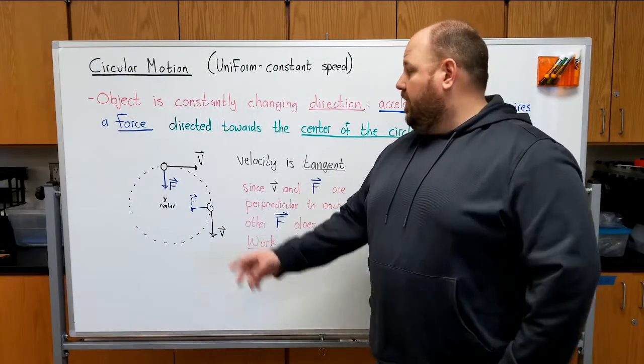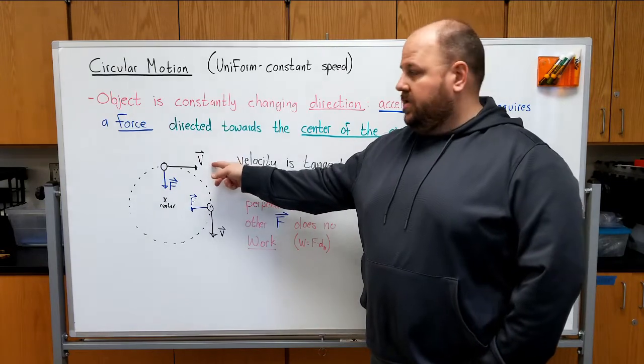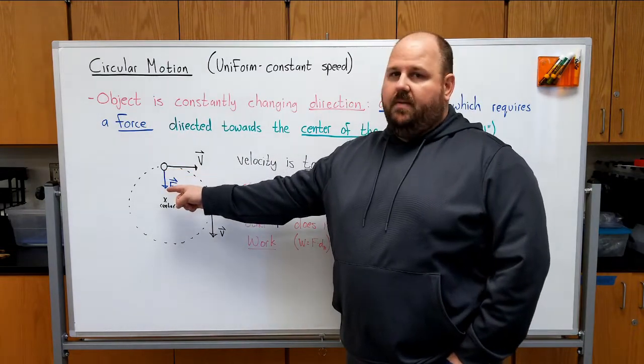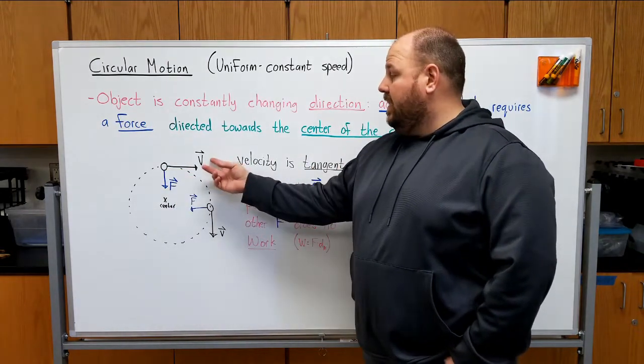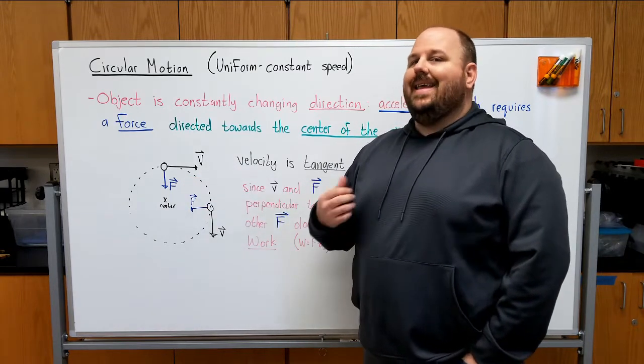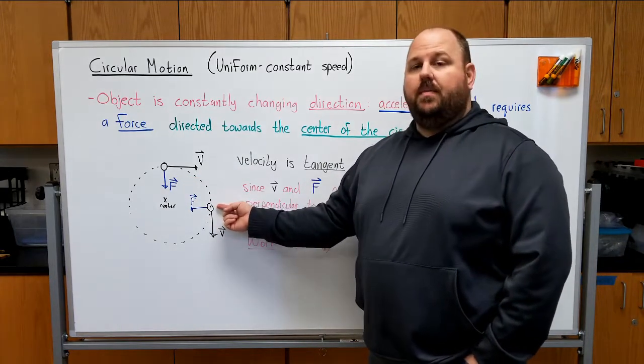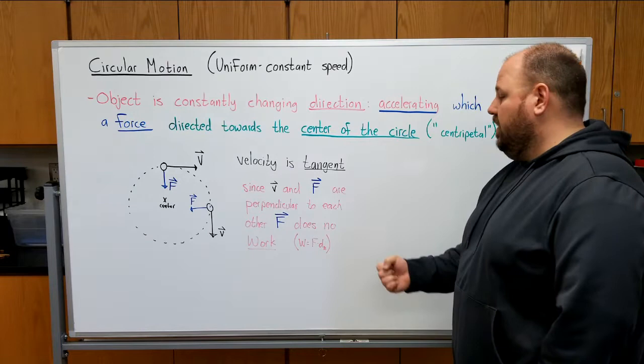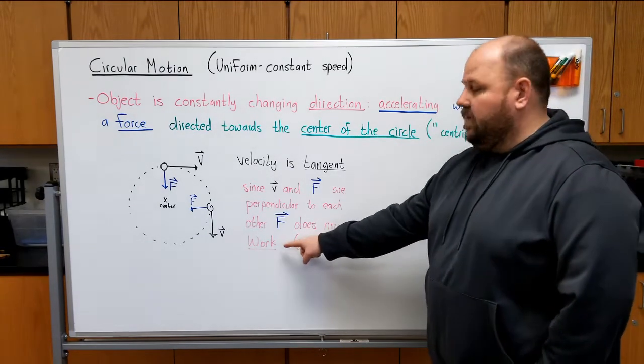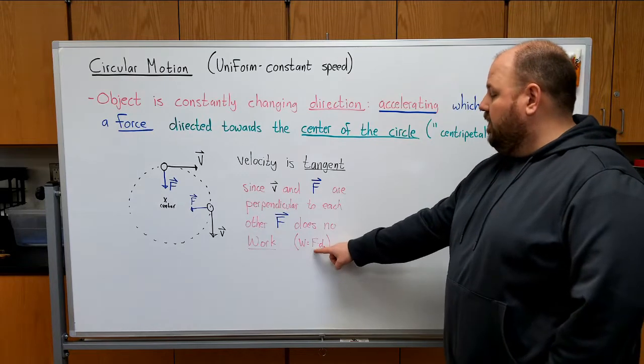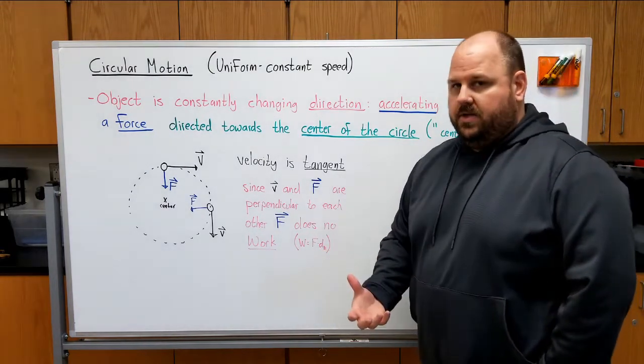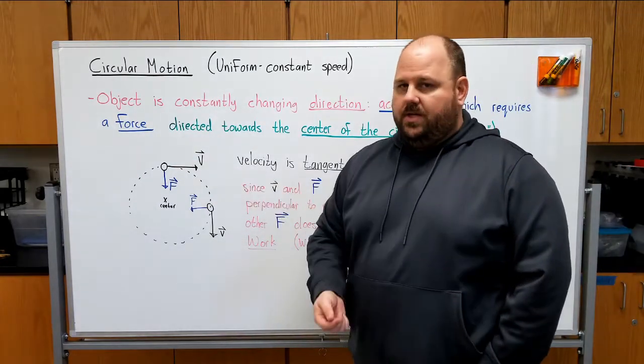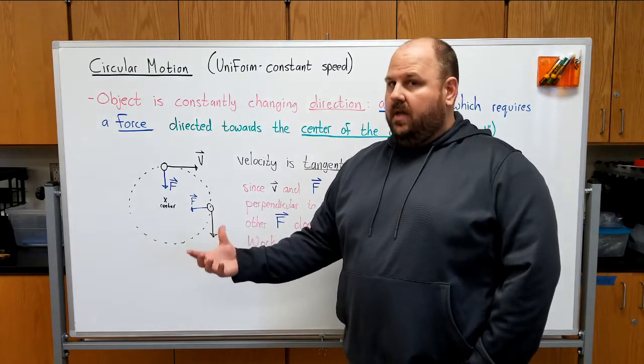So we've seen now that the velocity of something moving in uniform circular motion is always tangent to the circle. The force is always inward from that same point, and so what we can conclude from that is the velocity and the force are perpendicular to each other at any point along the motion of something moving in uniform circular motion. And so if the motion is uniform circular motion, we can make the claim that that force does not do any work, because remember work is only done when the force and the displacement are parallel to each other. And so we can claim that the force causing this thing to turn is only changing its direction, not its energy as it turns.